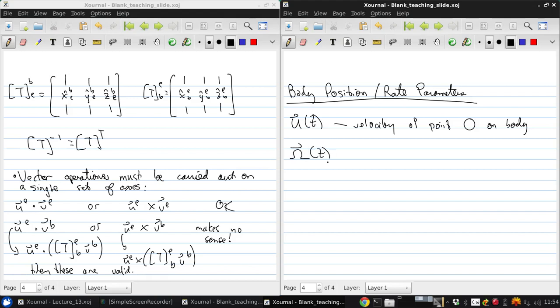To define rotation, we have omega of t, which is the rotation rate or angular velocity vector for the body.